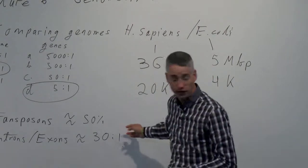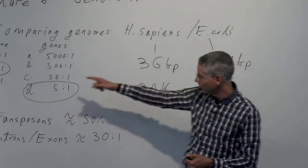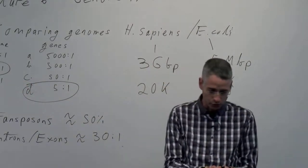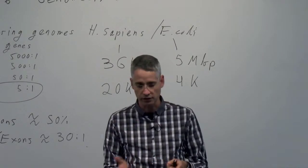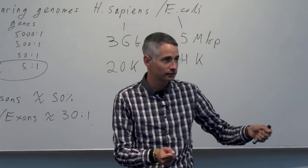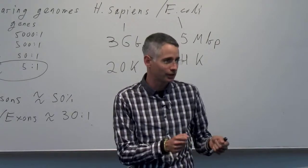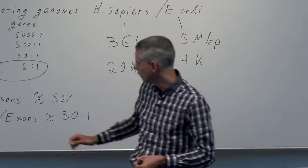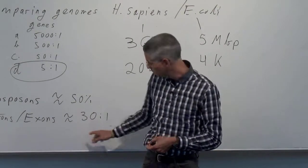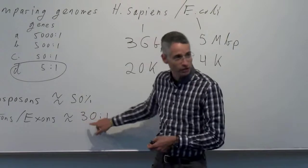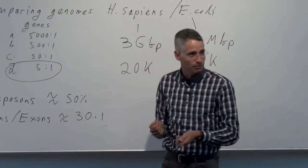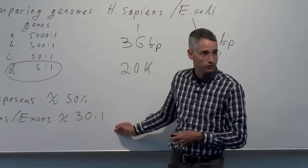Regulatory elements upstream of genes are more compact in bacteria than in eukaryotes — maybe just a few bases in bacteria versus a few kilobases in eukaryotes. But that wouldn't make a huge difference overall, maybe changing the ratio from 30 to 31. We need the dominant factors, which are the transposons at ~50% and the intron-to-exon ratio of ~30 to 1.